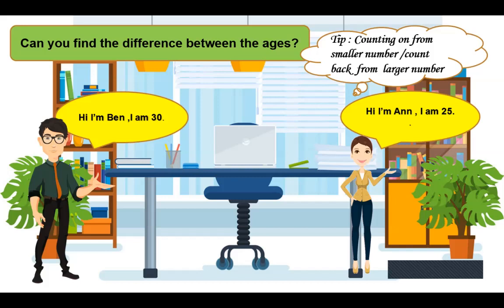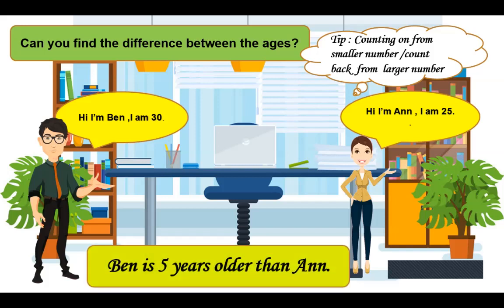26, 27, 28, 29, 30. So if you are counting on from smaller number to larger number, your answer is 5. So Ben is 5 years older than Ann.